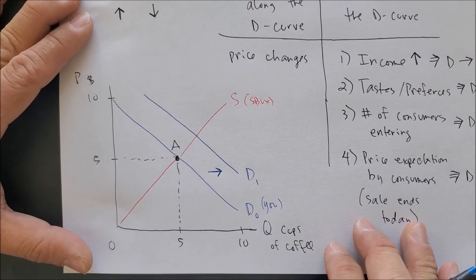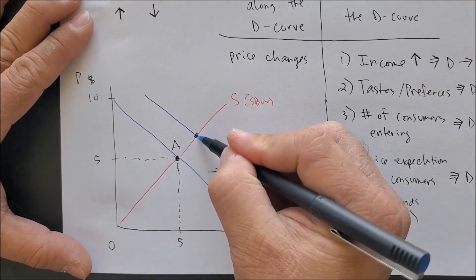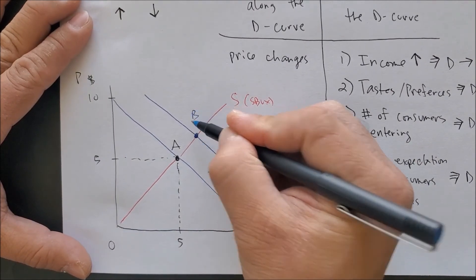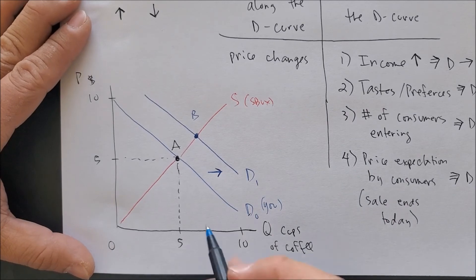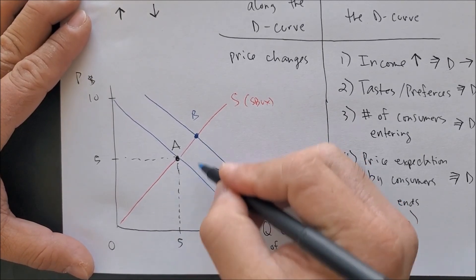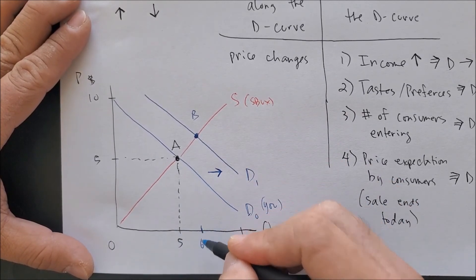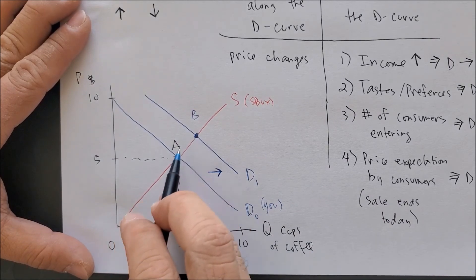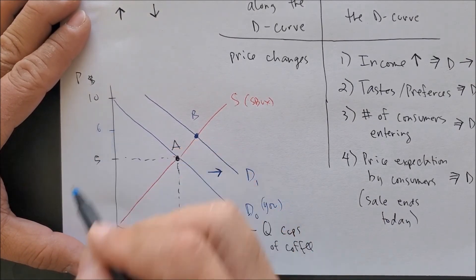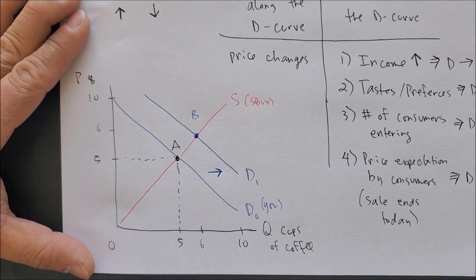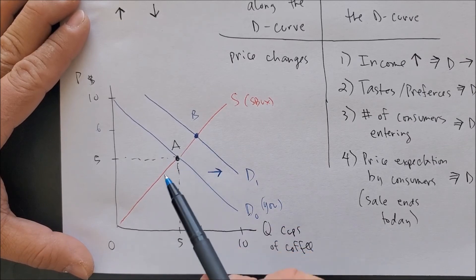And now I want you to see that we have a new market equilibrium at point B. And as you demand more, maybe six, maybe seven, it puts pressure on the price of a good to eventually rise. So when you really want something, it puts pressure on price to increase. And that's why we see the demand curve shift to the right.